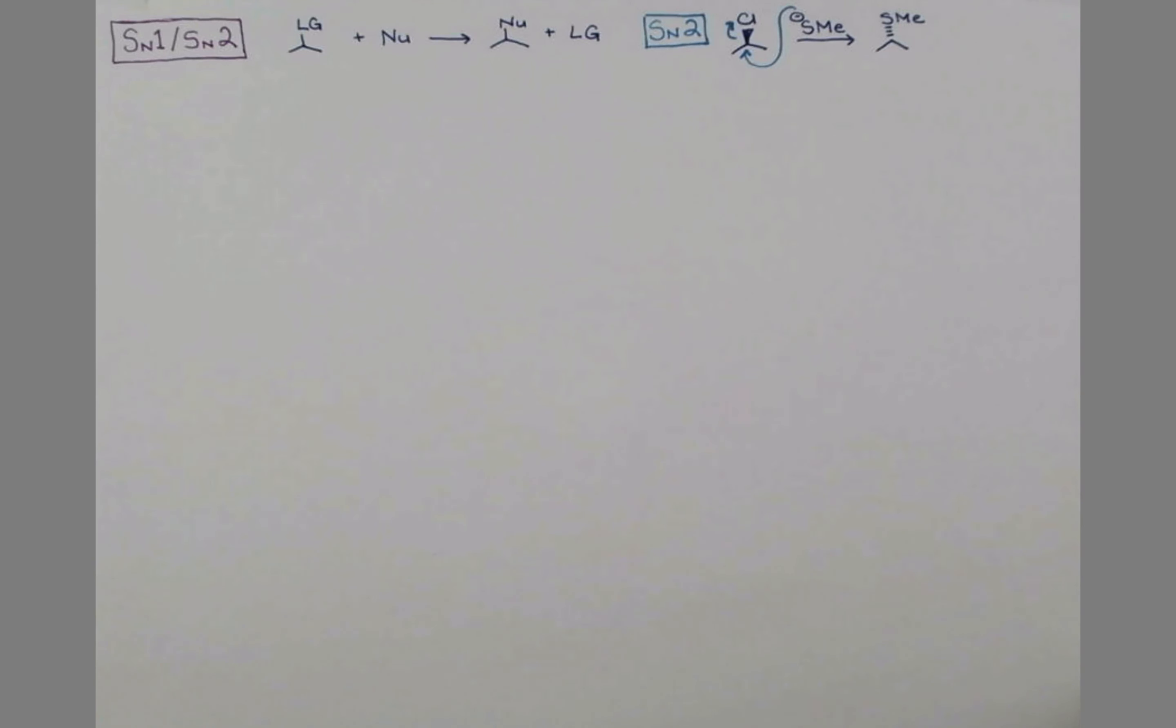In the SN2 mechanism, inversion of stereochemistry has resulted. The stereochemistry changed at that center. Of course, in this reaction, we also get our chloride ion that has been displaced.